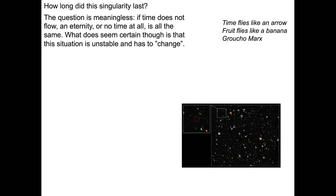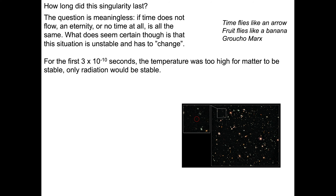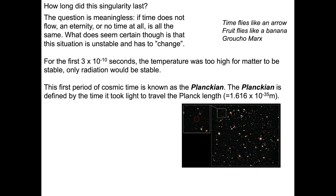How long did this singularity last? The question is meaningless — if time does not flow, an eternity or an instant is all the same. What seems critical is that this situation isn't stable and has to change, and how does it change? It becomes the universe. For the first 3 times 10 to the minus 10 seconds, the temperature was too high for matter to be stable. Only radiation was stable, and therefore only radiation was present. This first period is known as the Planckian.